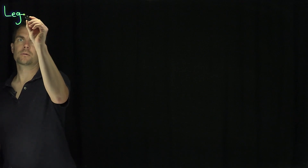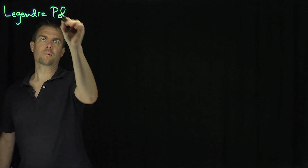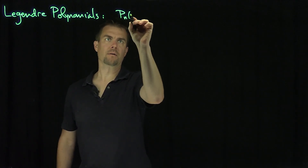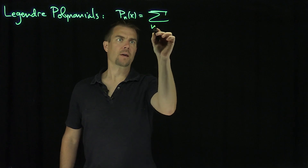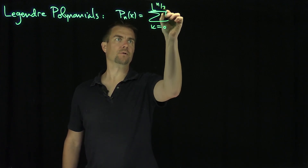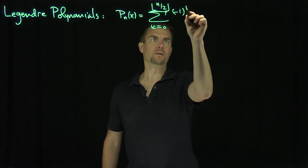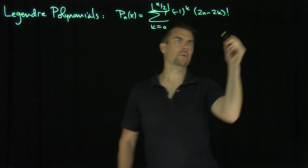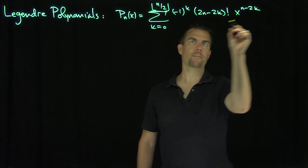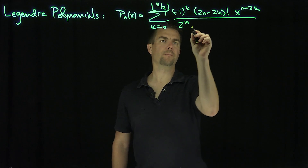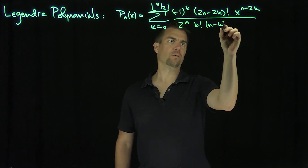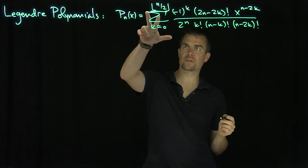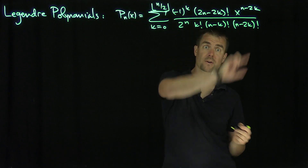Let's recall that the Legendre polynomials have the form Pn of x, which is the sum k goes from 0 up to the floor of n over 2, of negative 1 to the k, times 2n minus 2k factorial, and x to the n minus 2k, over 2 to the power n, k factorial, n minus k factorial, and n minus 2k factorial. This last factorial is what gives us the condition that k has to be less than the floor of n over 2 for this factorial to make sense.